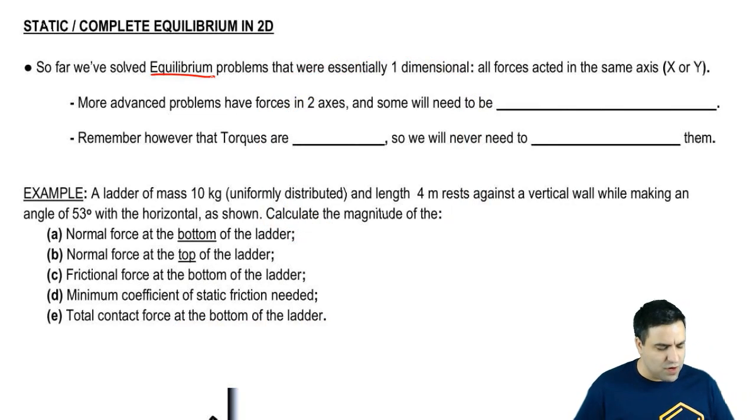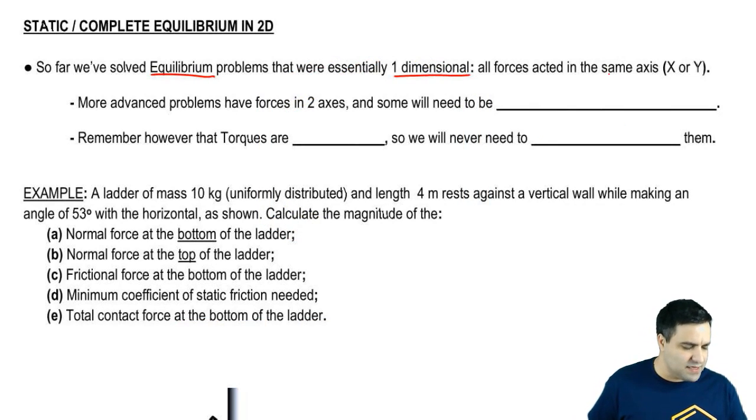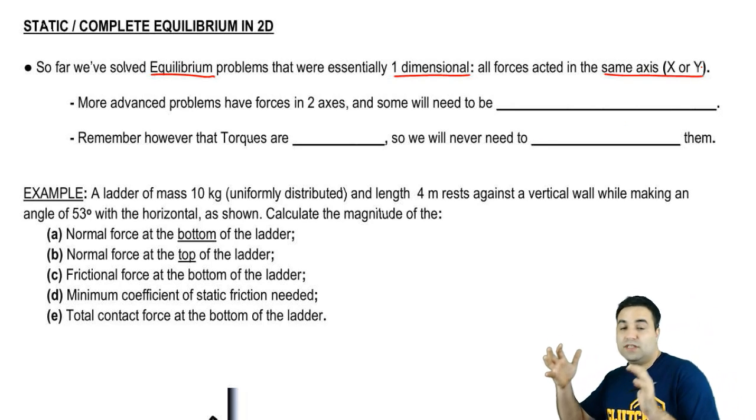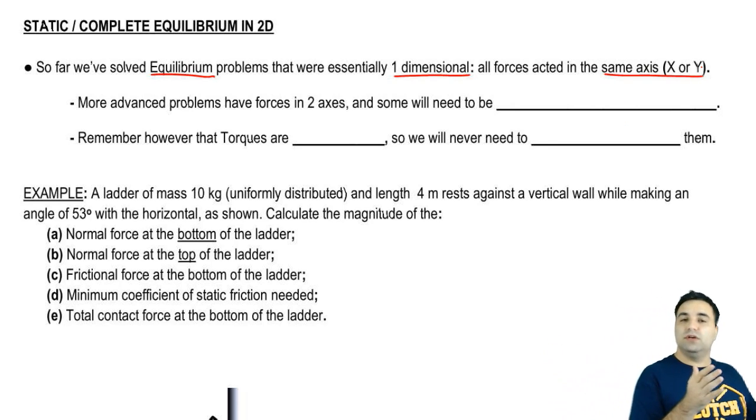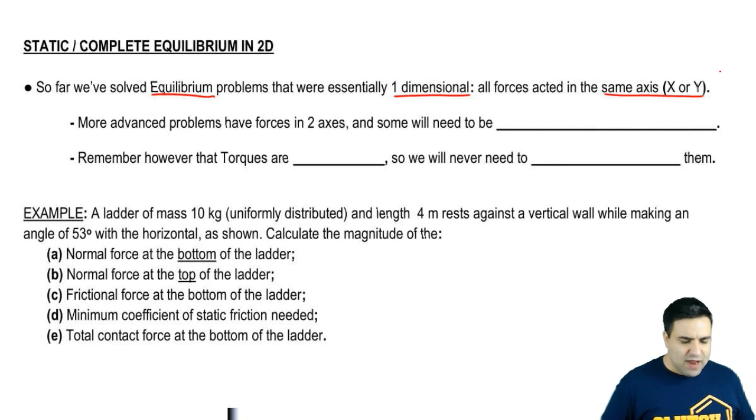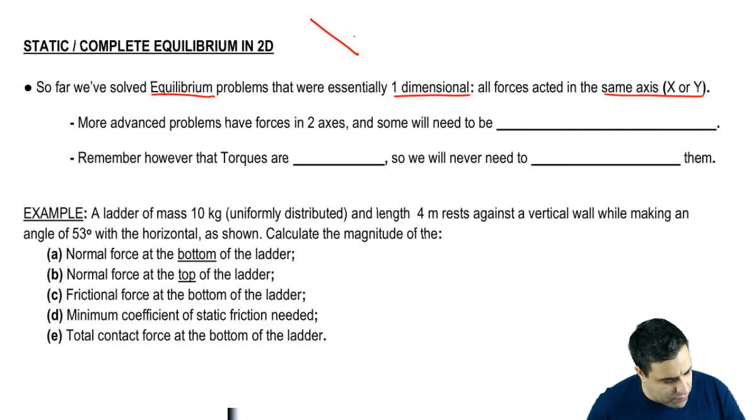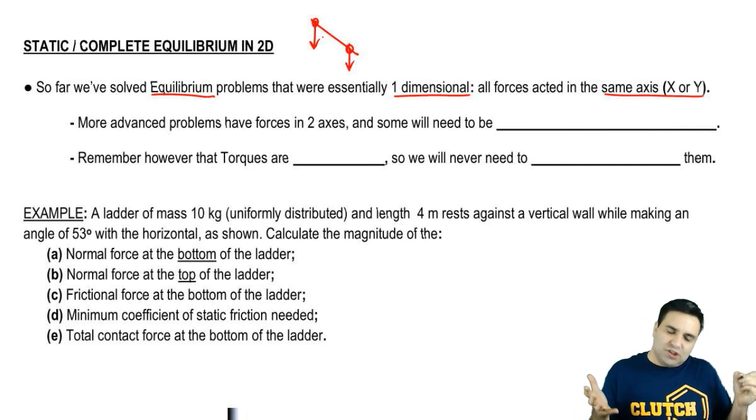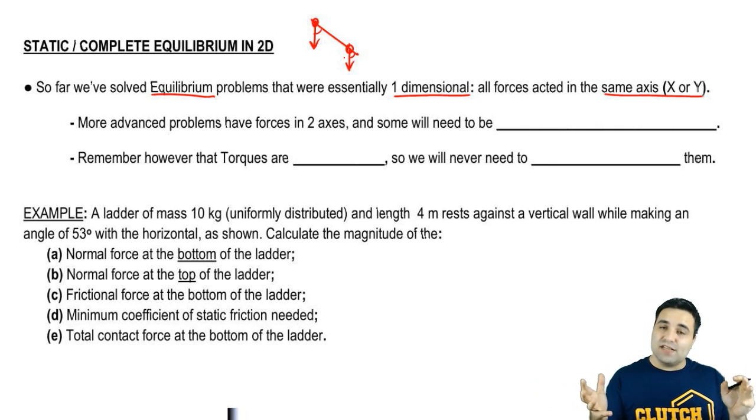So far we've solved equilibrium problems that were essentially one-dimensional, meaning all the forces acted in the same axis. Either you had all the forces in the x-axis or all the forces in the y-axis, most of them in the y-axis. And even if you had something at an angle like this, let's say you had something like this,